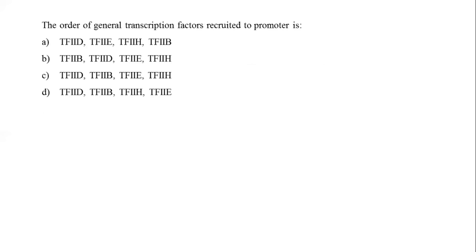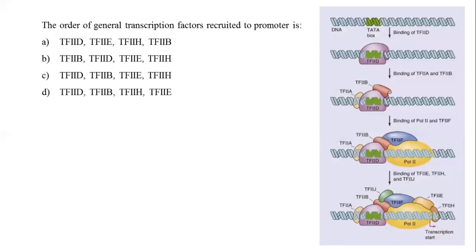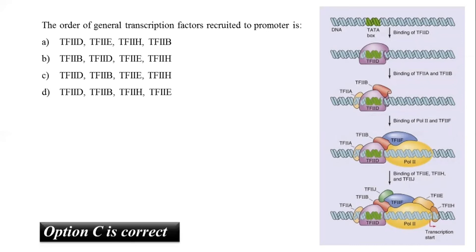The next question asks for the order of transcription factors recruited to the promoter. As you can see in this figure, the correct order is TFIID, TFIIB, TFIIE, TFIIH. The correct answer to this question is option number C.